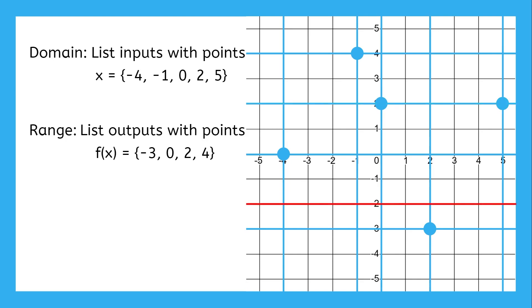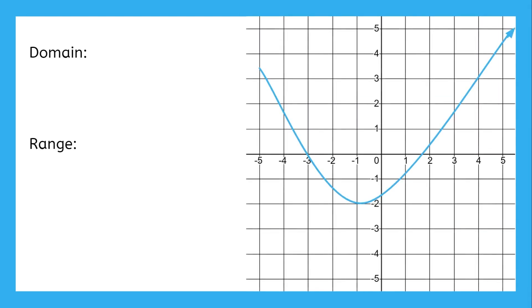Negative two, though, is not because none of the inputs have a point there. But as we all know, not all graphs are discrete. Let's find the domain and range of a similar graph, but continuous.